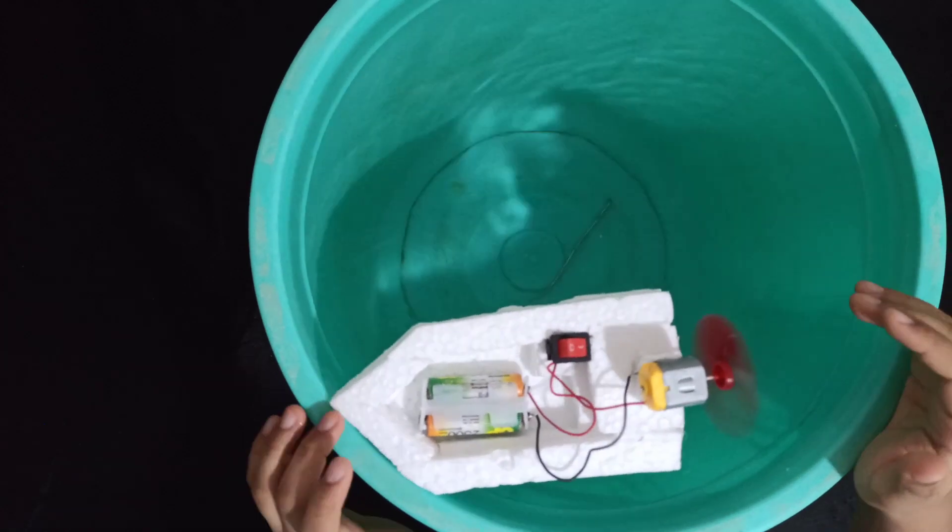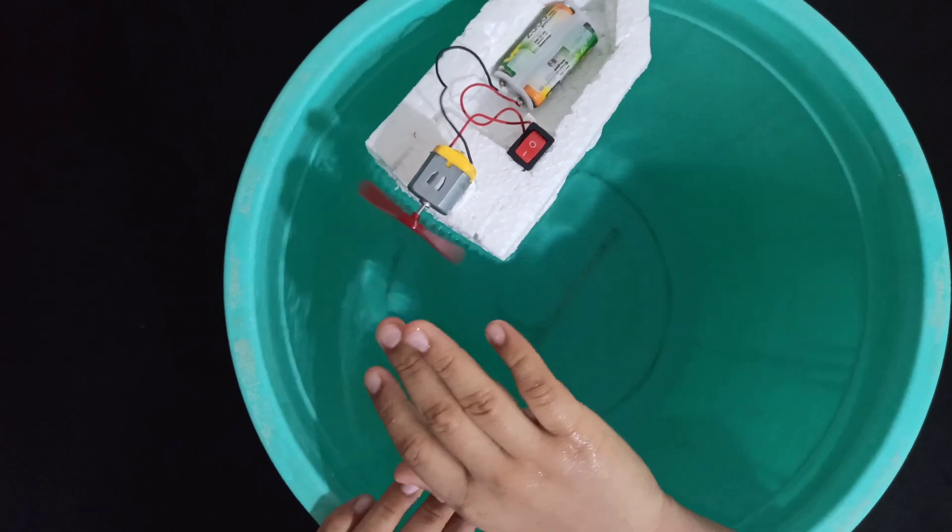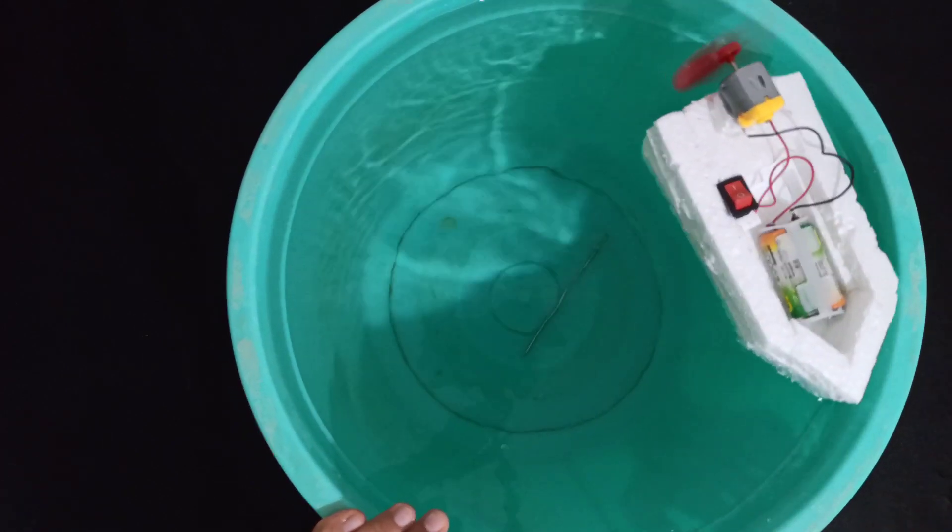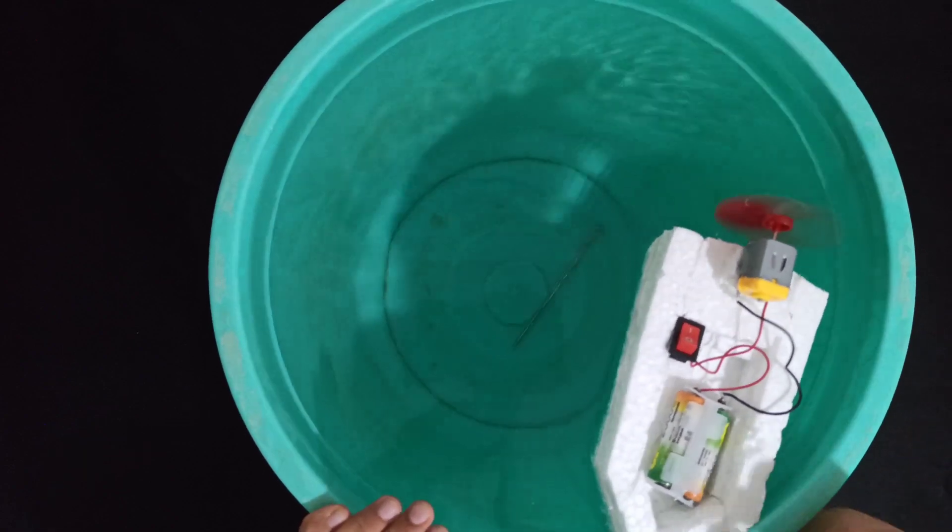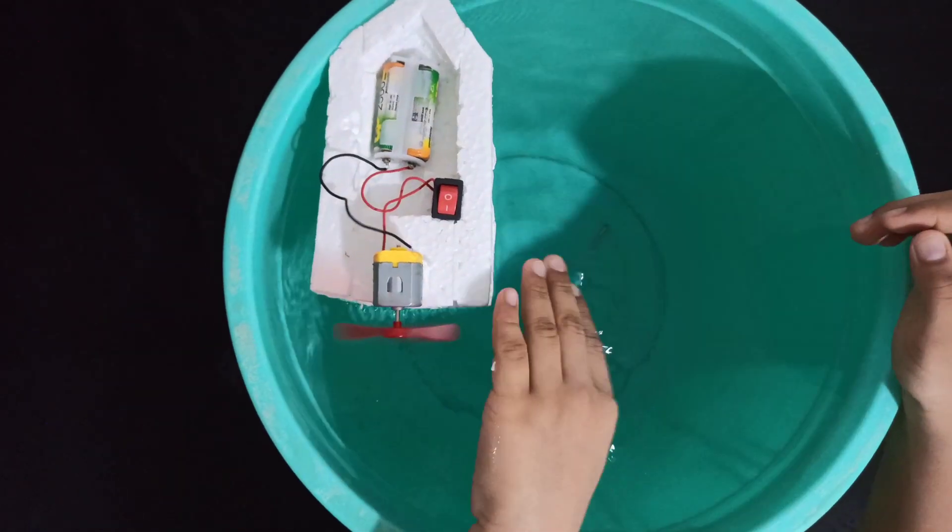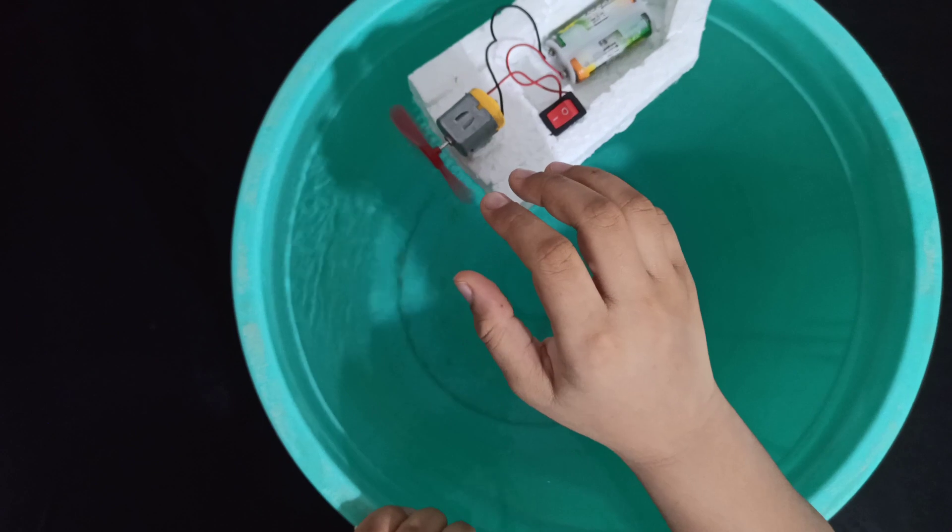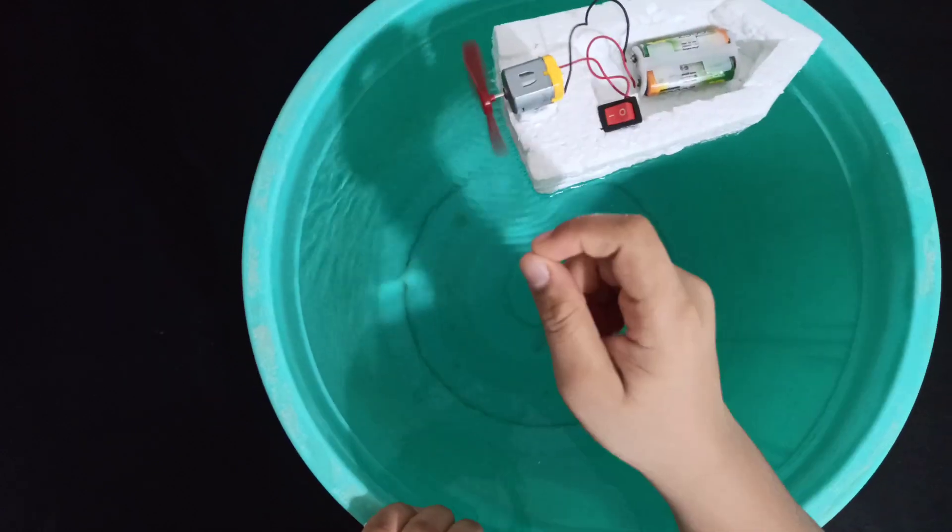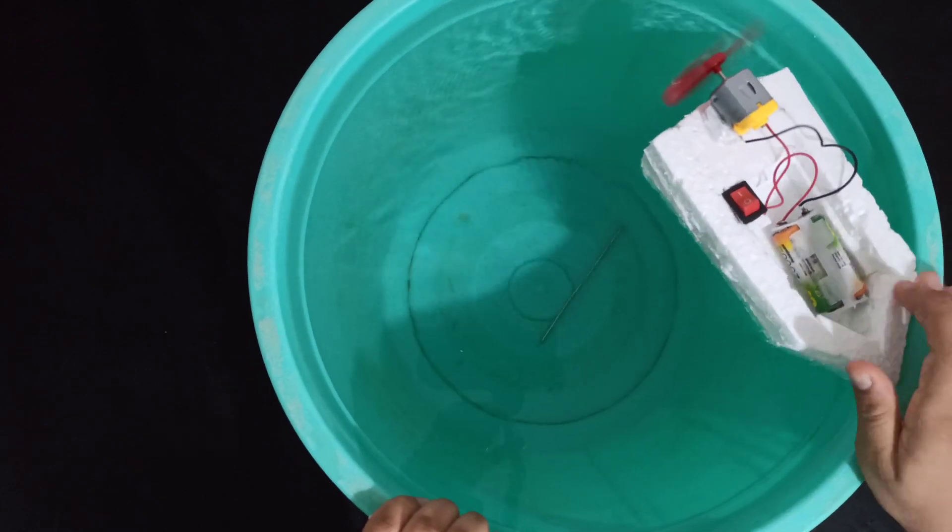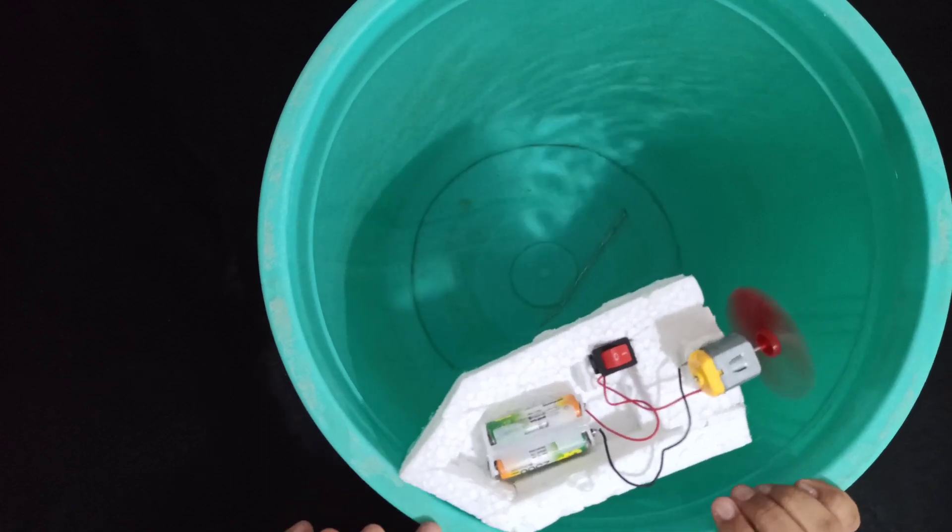Now the second question is why our boat is moving forward, why not backward? Here we apply Newton's third law, which states that for every action there is an equal and opposite reaction. So when our propeller flows air backwards, there is an opposite force which helps our boat to move forward. Don't stop watching, I have still two more boats to go.